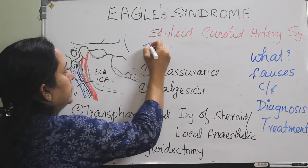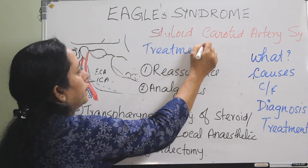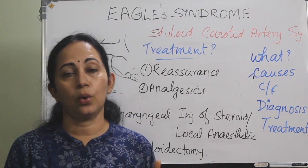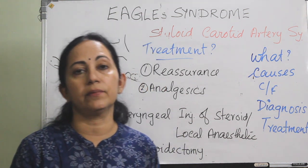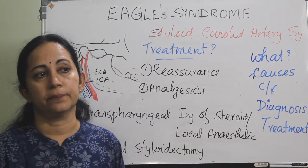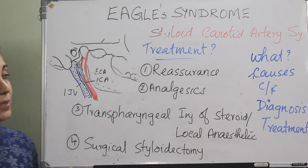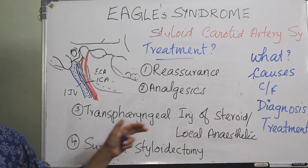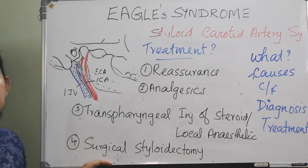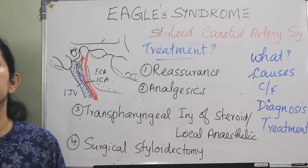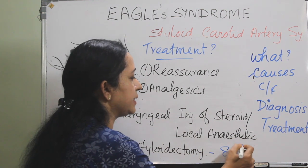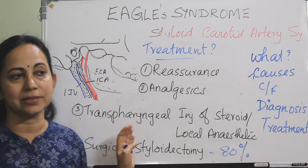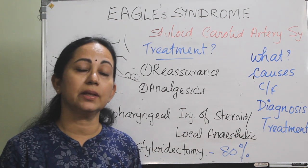In treatment: 4% of the population have an elongated styloid process, and of those, only 4 to 10% have difficult-to-manage symptoms. In a small percentage, reassurance along with analgesics is enough. We can also go for a transoral injection of steroid or local anesthetic agent. If not relieved by these measures, surgical styloidectomy is required, with a cure rate of 80%. The treatment of choice for symptomatic Eagle Syndrome is surgical styloidectomy — either a transoral approach, which is commonly used, or a lateral approach.